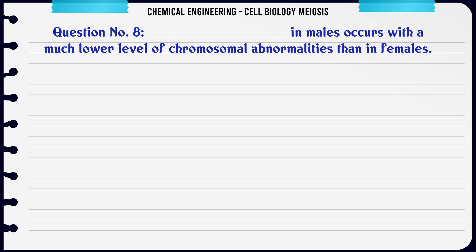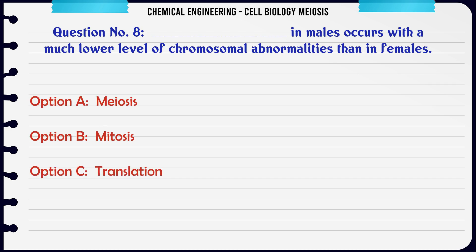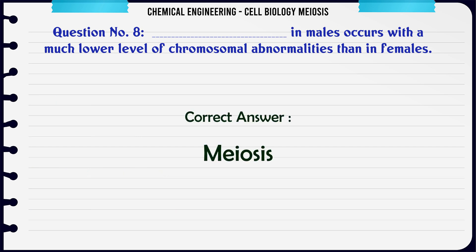In males, which process occurs with a much lower level of chromosomal abnormalities than in females? A. Meiosis. B. Mitosis. C. Translation. D. Transcription. The correct answer is Meiosis.